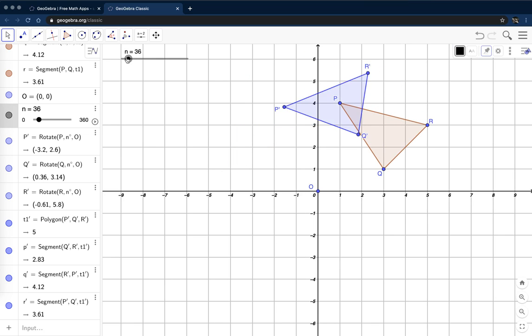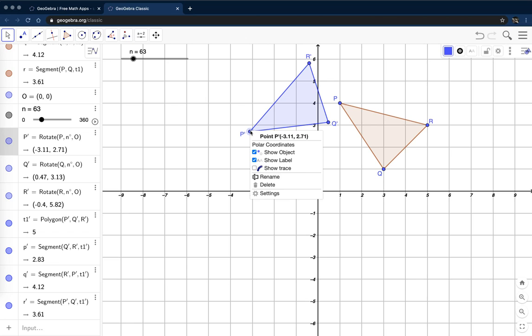Just something else I want to do is when my image is on top of my pre-image, when there's been no rotation, I don't want it to be visible. So I'm going to change some features here. I'm going to click on the point with either two fingers or right-click. I'm going to go to Settings.